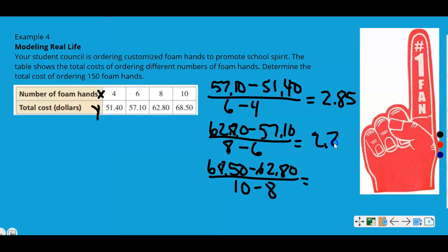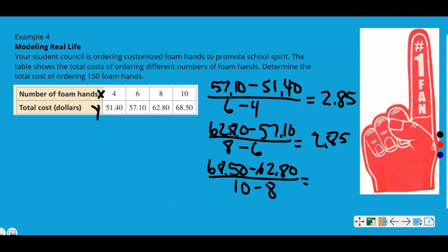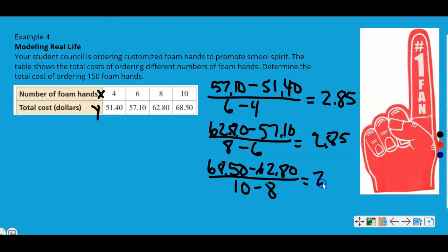Let's use parentheses first this time. So 62.80 minus 57.10. Just goes to show you that the calculator is only as smart as the person putting in the information. So 8 minus 6 is 2 as well. 2.85. So the first two have the same rate of change. That's a good sign. Let's check the last one just to make sure.